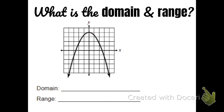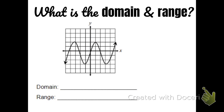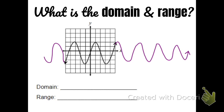Let's do one more. Looking at the domain, we see this is kind of a squiggly line. Because there are arrows, this graph is going to keep going up and down forever to the right, and up and down forever to the left. So the domain is from negative infinity to positive infinity.